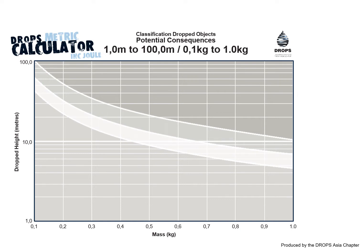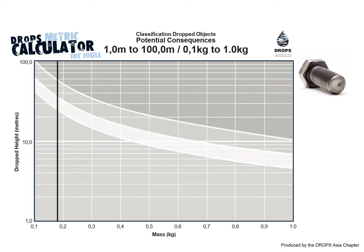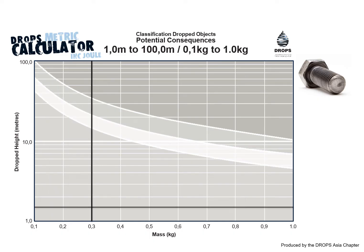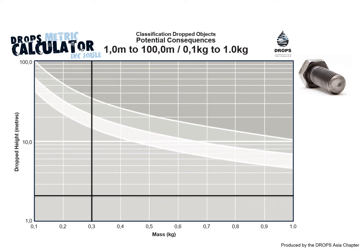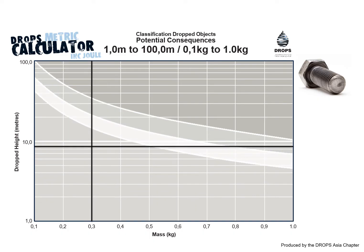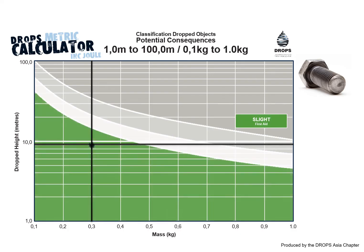To begin, identify the object's weight. Let's say we have a bolt that weighs 300 grams. Next, measure the height from which the object could potentially fall — let's say 9 meters. Ensure this is measured from the solid deck or ground level, and not just from the height of an individual.